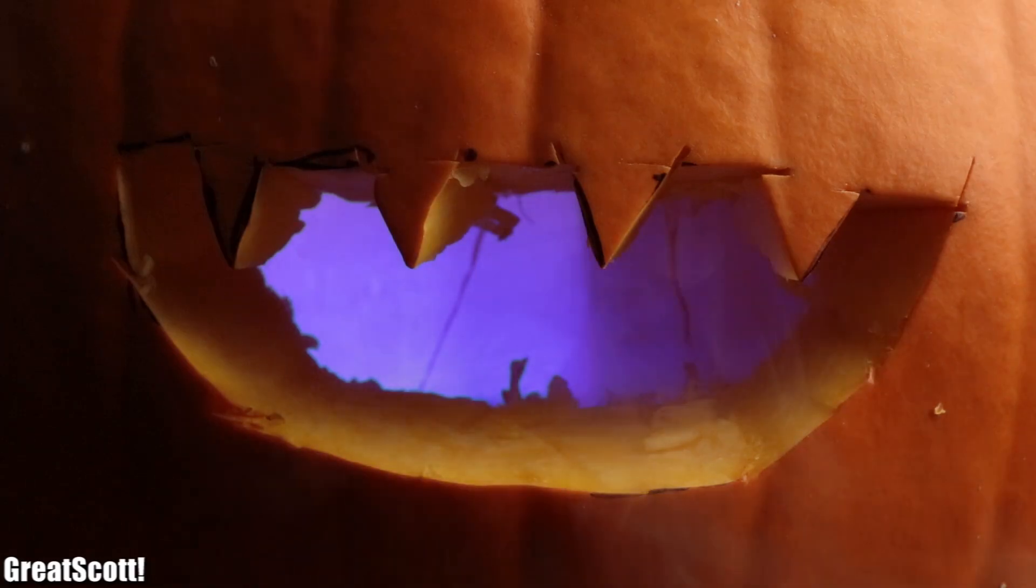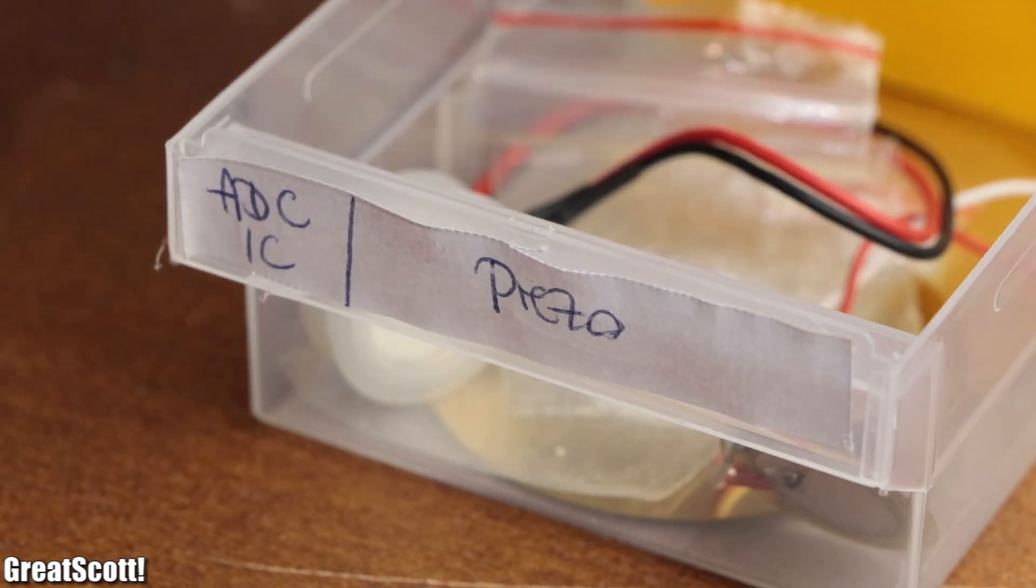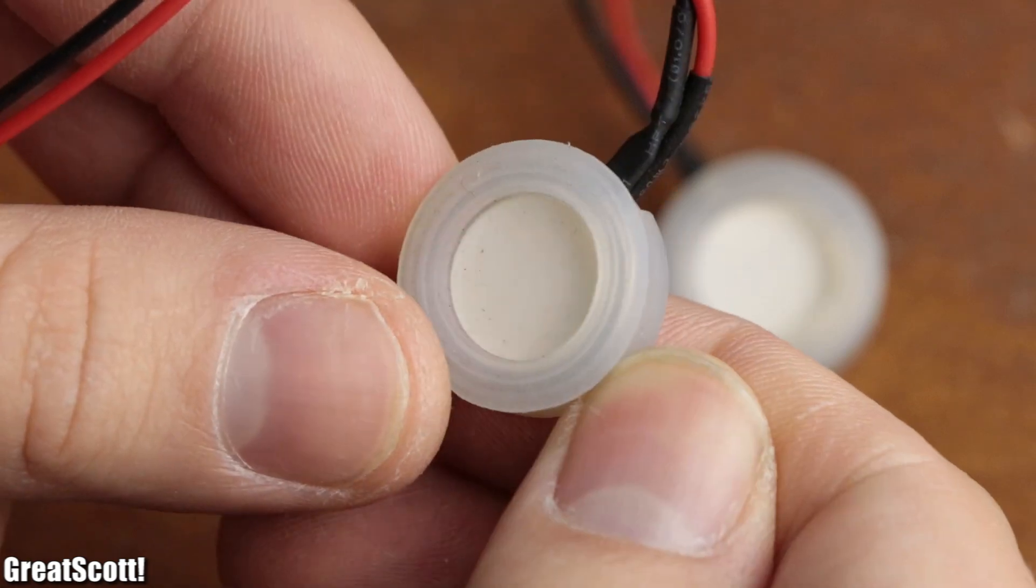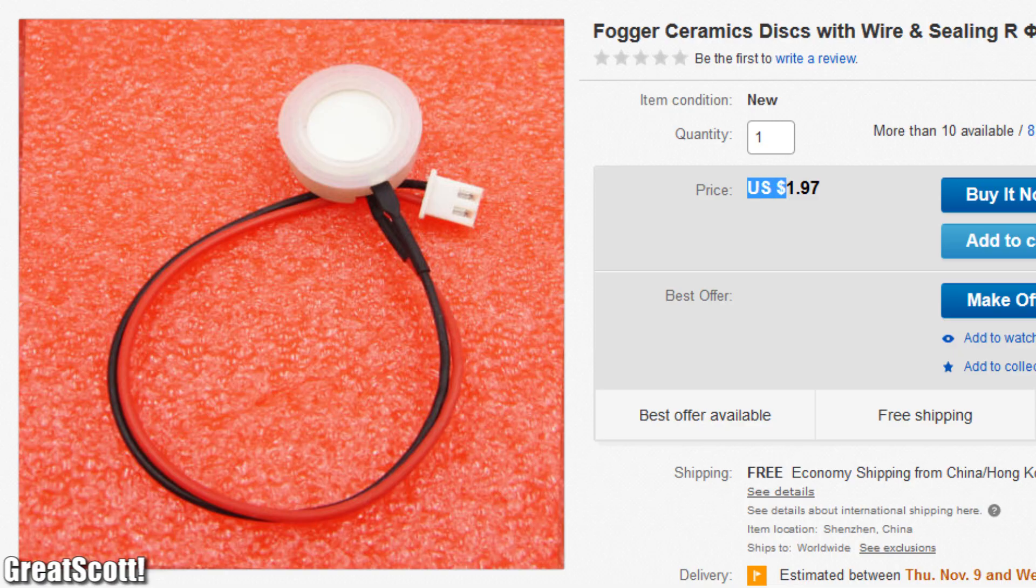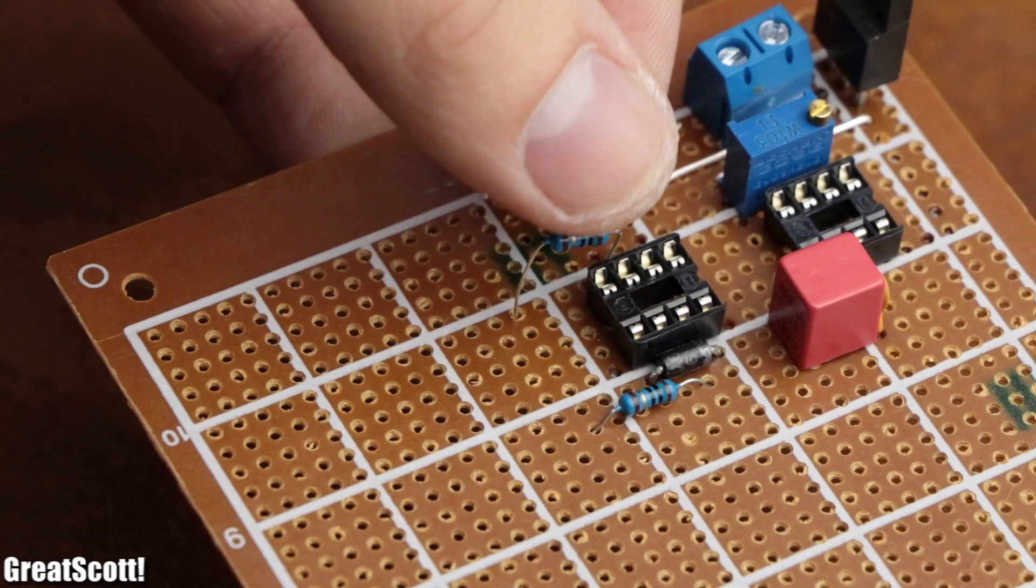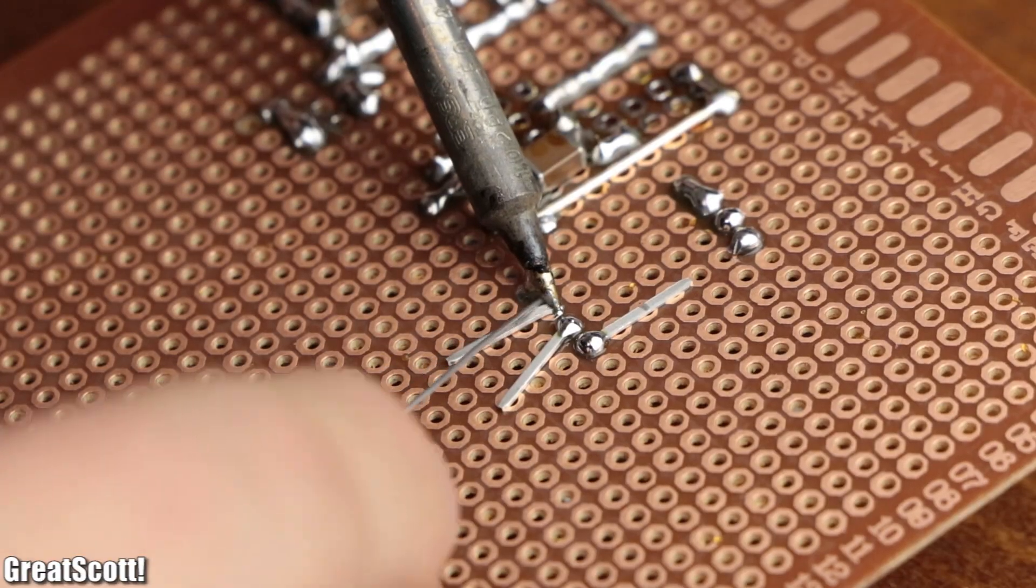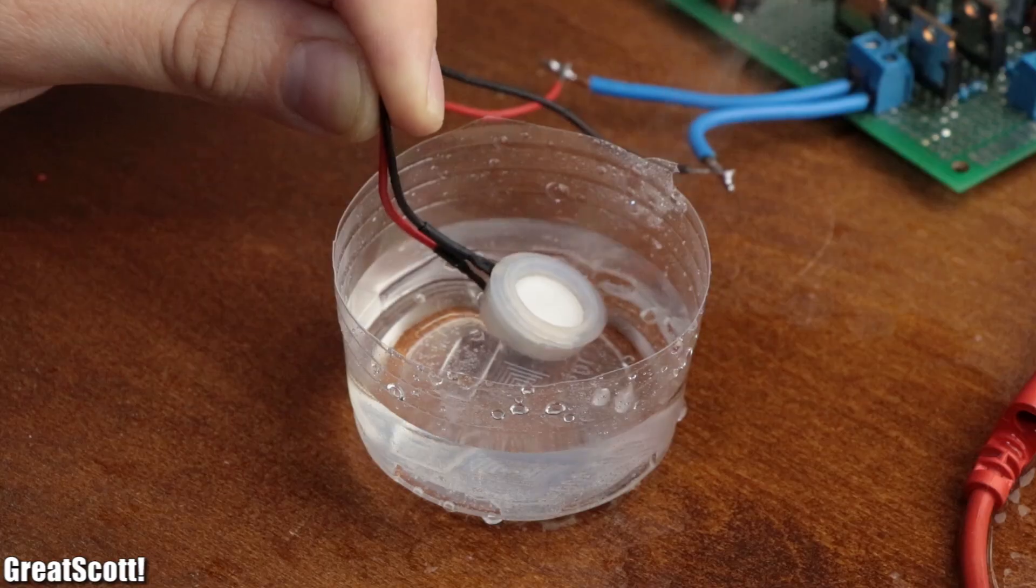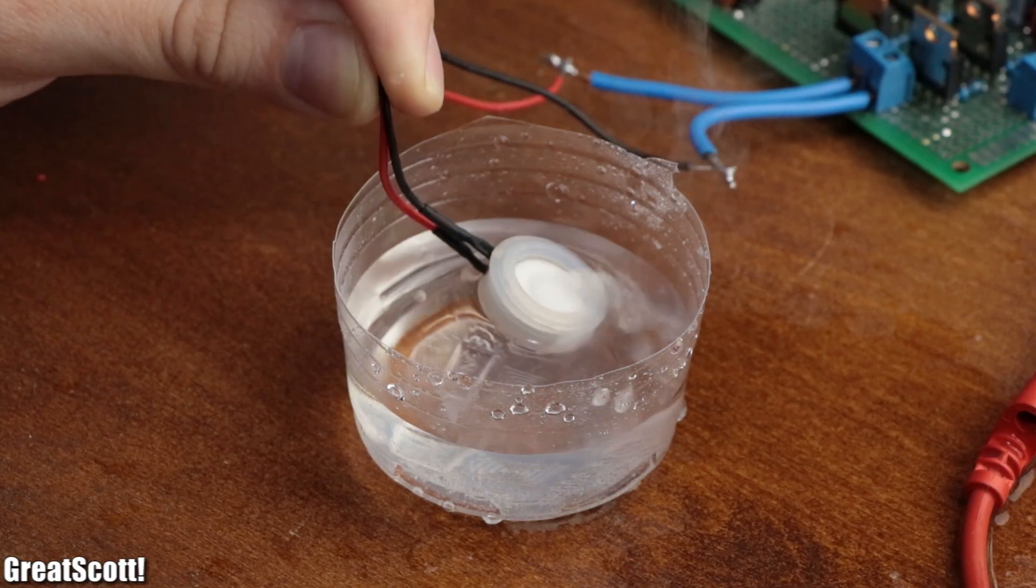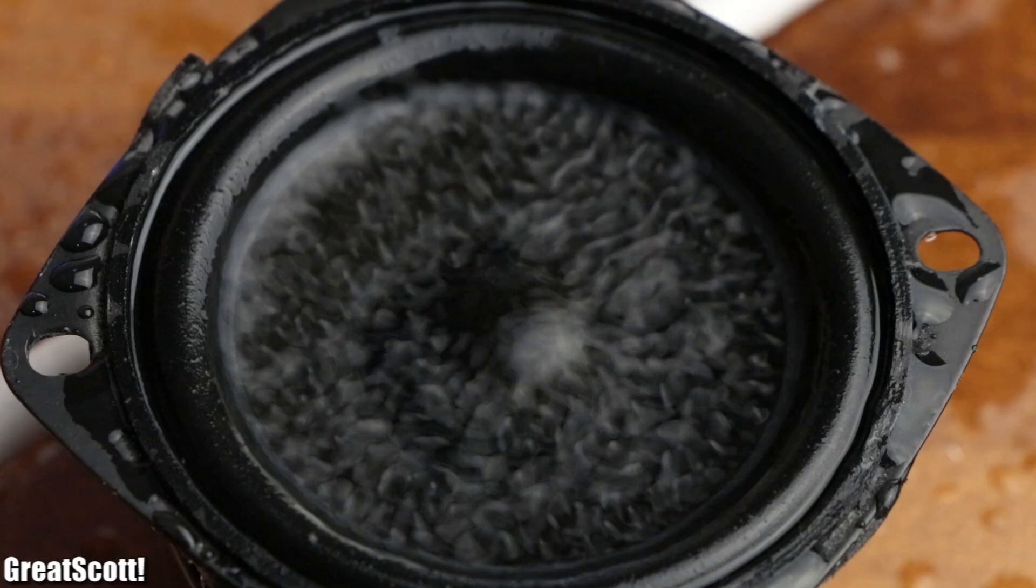Now, you can get such an ultrasonic mist maker for around $9 from eBay. But a while ago, I also bought myself two ultrasonic piezoelectric discs from eBay for only $2 each. Those are the main components of the mist maker. So the question of this DIY or buy episode is whether it would make sense to create our own driver circuit for such a piezoelectric disc or whether we should just buy the commercial product instead. Let's find out.